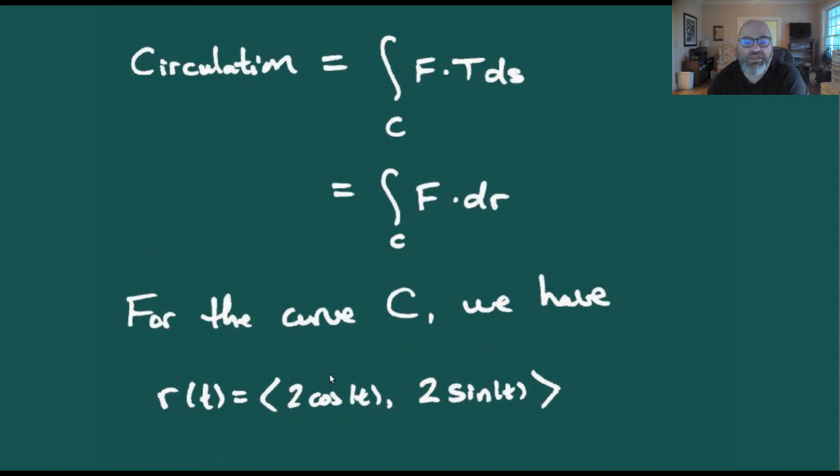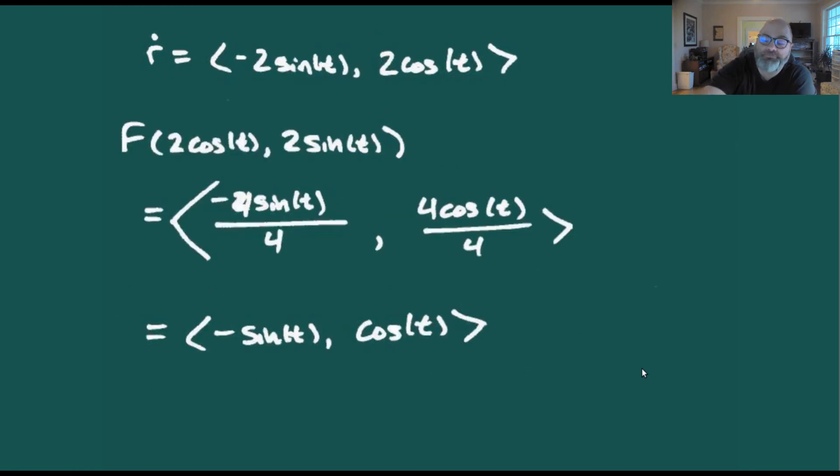For the curve C, since we want a circle of radius 2 centered at the origin, we take the parameterization r(t) equals 2 cos(t), 2 sin(t) in the counterclockwise direction. So our r dot then looks like negative 2 sin(t), 2 cos(t). Our vector field evaluated on that curve looks like F of 2 cos(t), 2 sin(t), which when we plug everything in cancels out those fours and we get minus sin(t), cos(t).